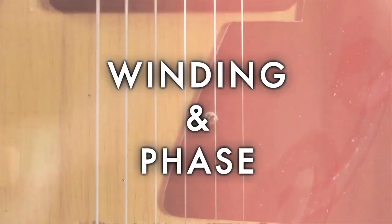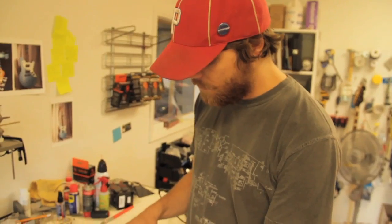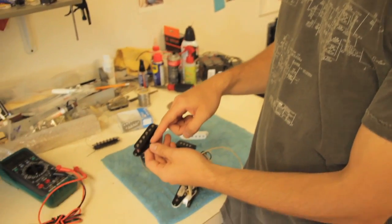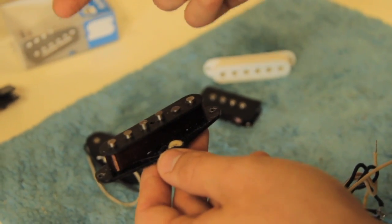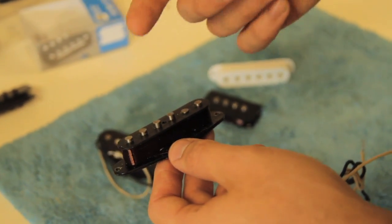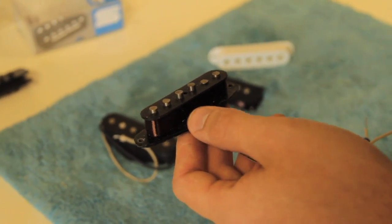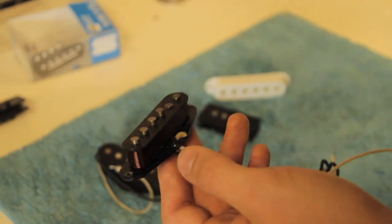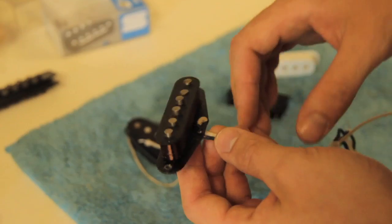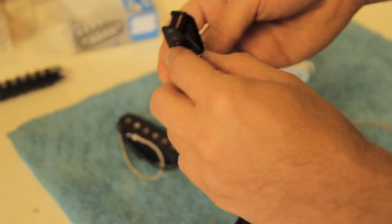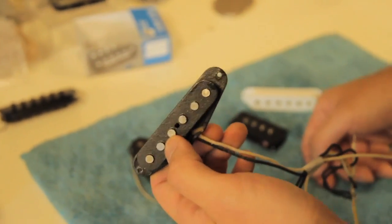So how a pickup works is you start with one end of this very thin wire, and you start wrapping it around a few thousand times. Usually anywhere from six to twelve thousand up to fourteen thousand times. And then when you end, you have your output. So the start is usually the ground. The more times you wind it, the more output you get.